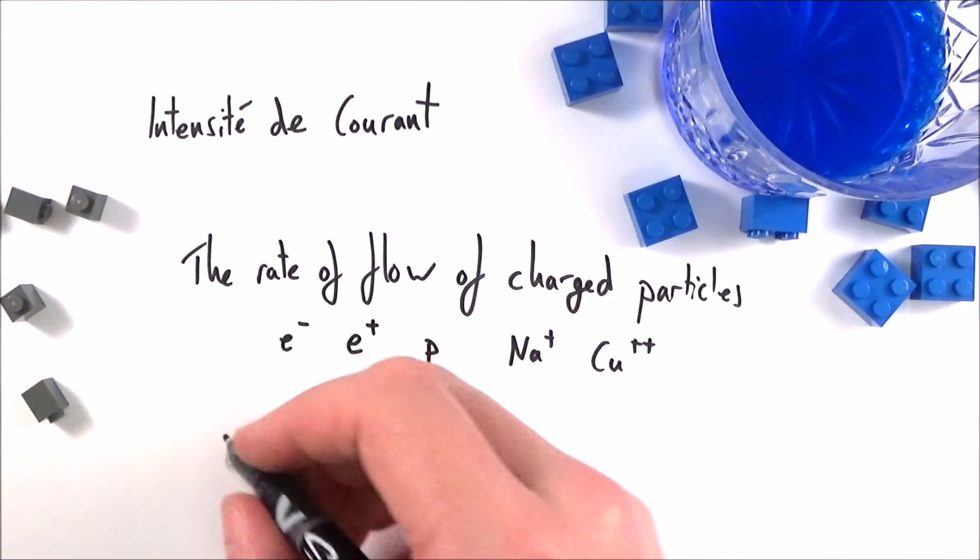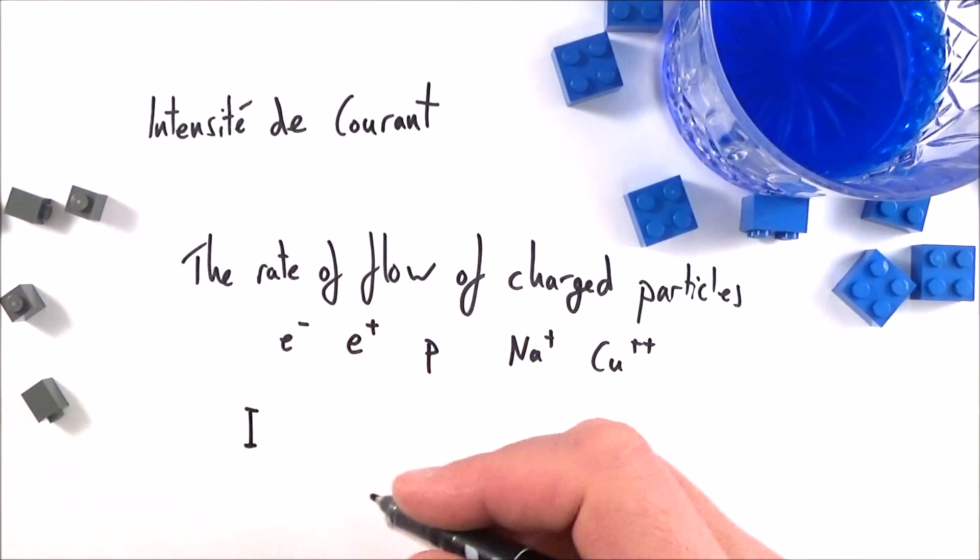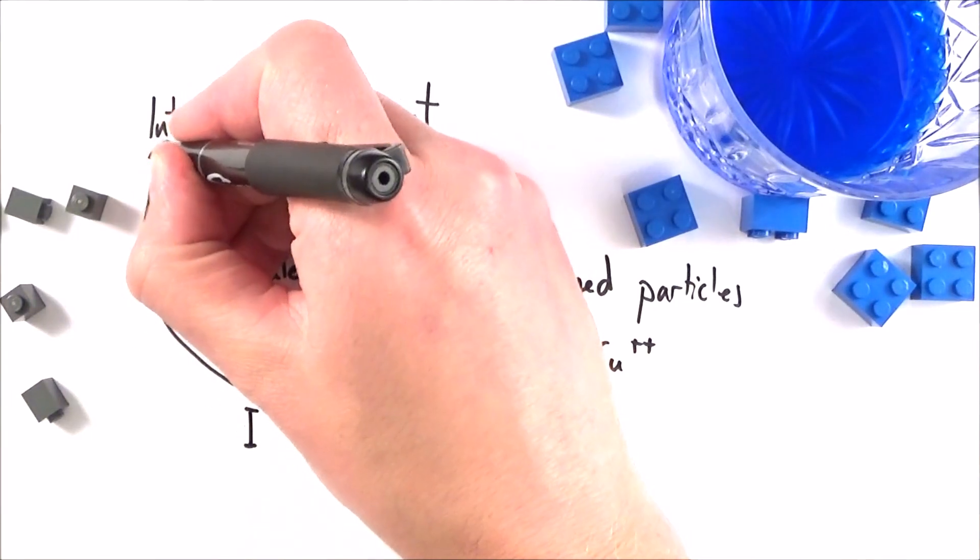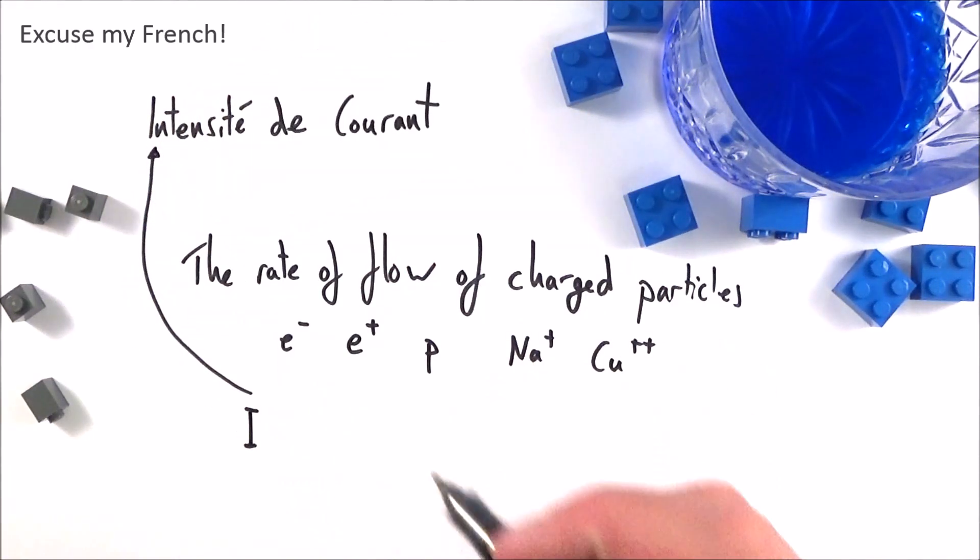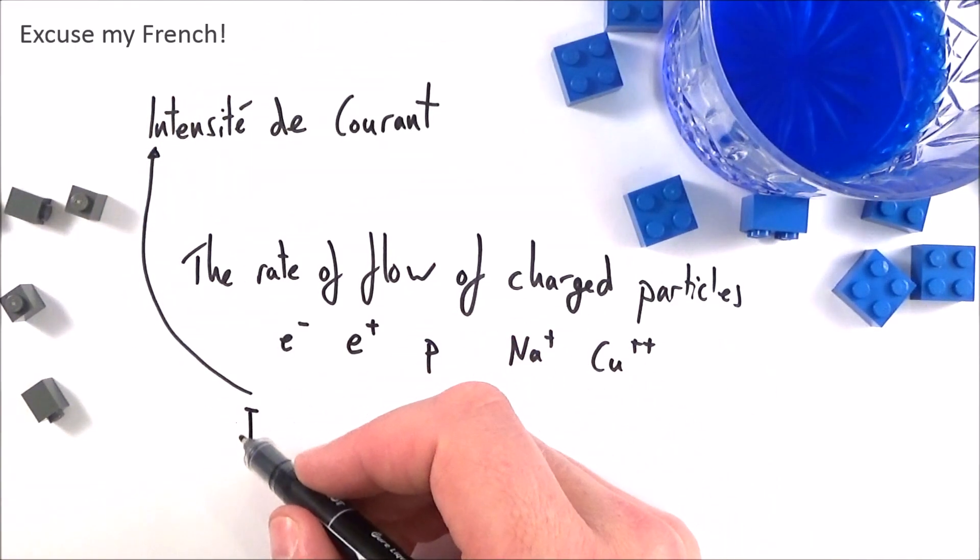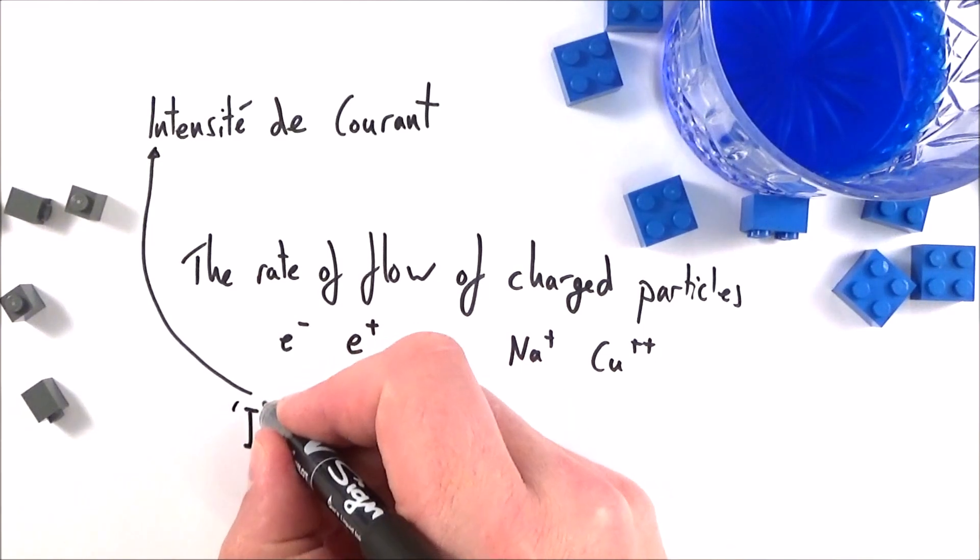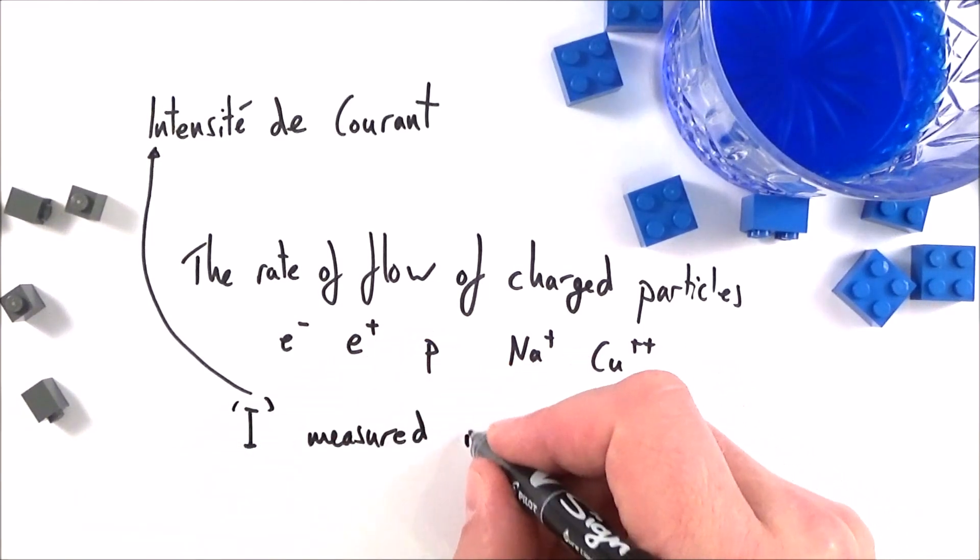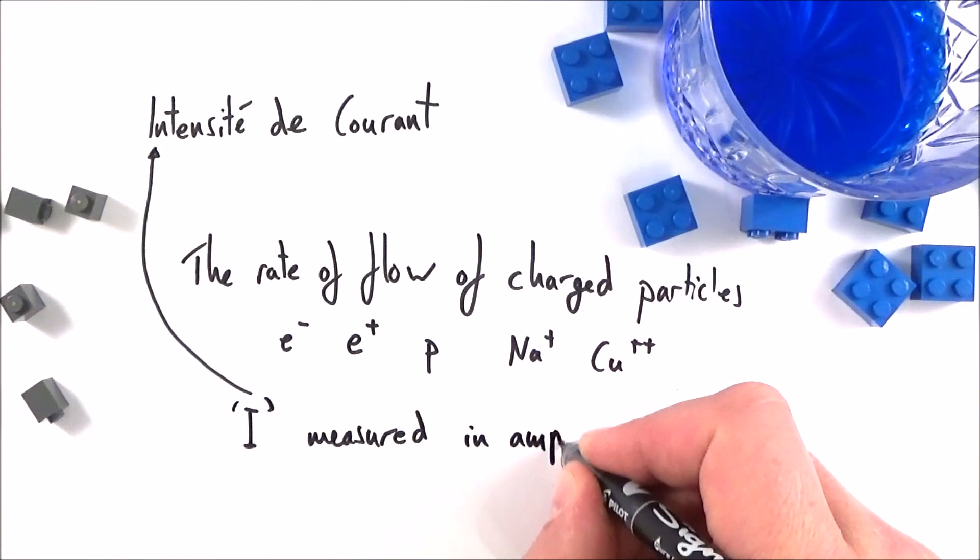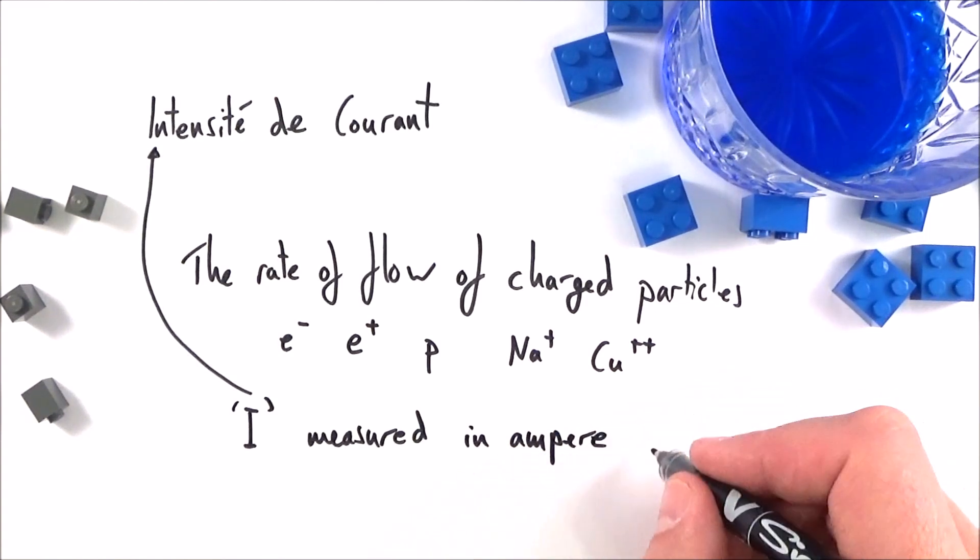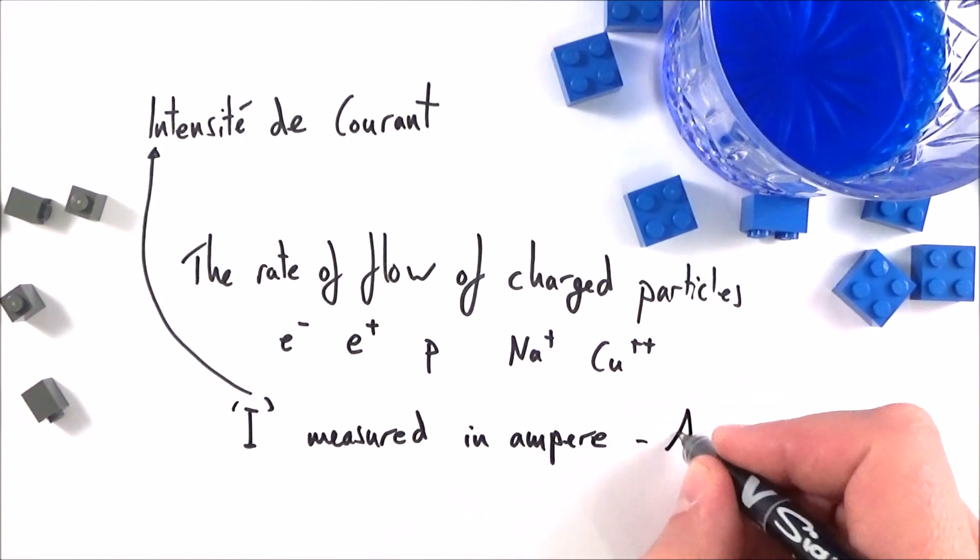The symbol that we give to electric current is the symbol I, and this comes from the French 'intensité de courant.' It's this symbol I that we use for electric current, and it's this current I that is measured in the unit which is one of the seven base units, the ampere, and that has the symbol capital A.